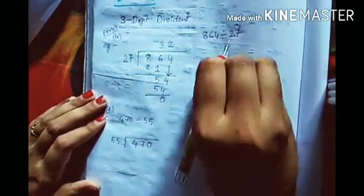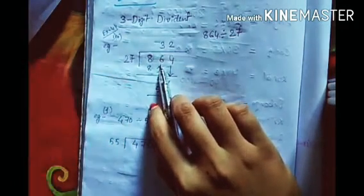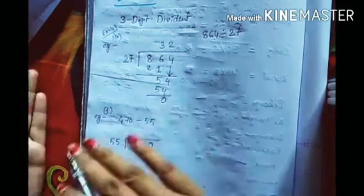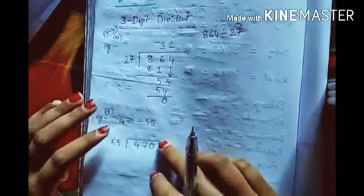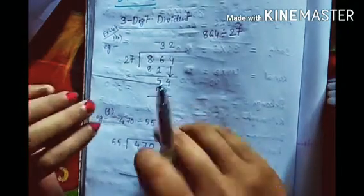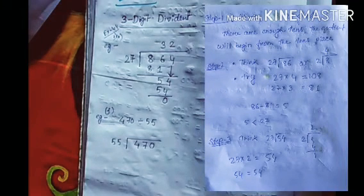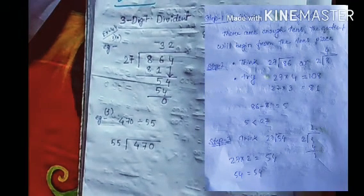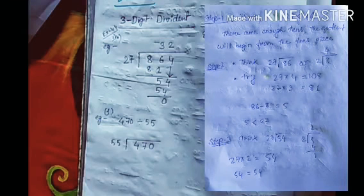It is given that we have to divide this number with 27. So this is the question - now we have to write it first like this. As you know, we use the estimation method where we guess. Here, first of all, you can see 27 is less than 86. So 27 is our divisor and 86 - we are considering the two digits from our dividend, which is 864.